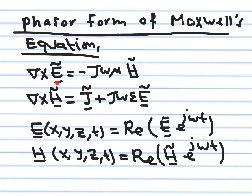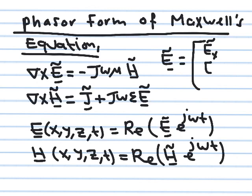Let me remind you of these equations. The first Maxwell equation: curl E = −∂B/∂t. In phasor form, ∂/∂t becomes jω and everything becomes a phasor. E is a vector phasor with three components: Ex, Ey, Ez — each is a phasor with its own amplitude and phase. They are all sinusoidal at the same frequency but differ in amplitude and phase. The same applies to H and D.